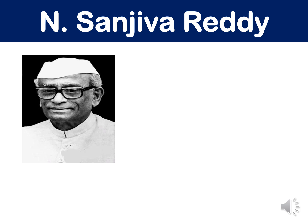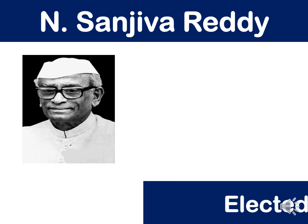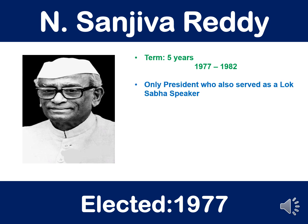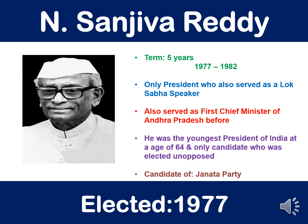The next president was N. Sanjeeva Reddy. He was elected in 1977 and served a term of five years from 1977 to 1982. He was the only president who also served as a Lok Sabha Speaker. He also served as the first Chief Minister of Andhra Pradesh. He was the youngest president of India at the age of 64 and the only candidate elected unopposed. He was the candidate of Janata Party.